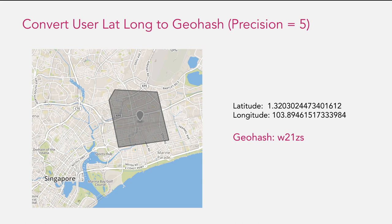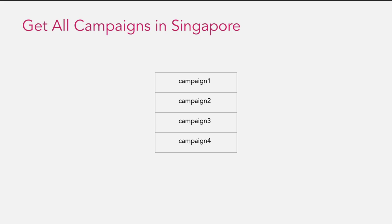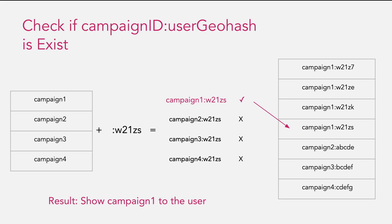Let's say this user is inside the delivery area of restaurant 3 in campaign 1. Our campaign API gets the user's lat/long from the frontend app, then converts it to a Geohash with precision 5 — we get W21ZS. Then we get all campaigns from our database, getting 4 campaigns. We check for each campaign combined with the user Geohash if it exists in our database — meaning there is a restaurant delivering to this user — and then we can show campaign 1 to the user. Now we only need one query to the database per campaign.